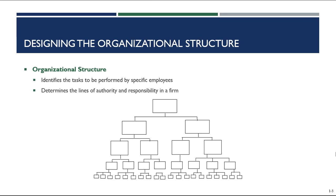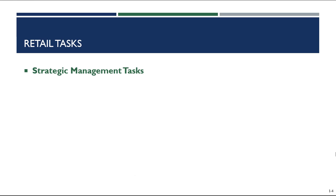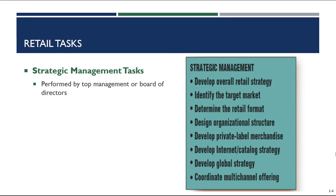The first group of tasks is called strategic management tasks, which are performed by senior management — the CEO, board of directors, or, for an independent retailer, the owner. This list of tasks is available in your textbook in Chapter 9. The strategic management team is responsible for developing the overall retail strategy, including all six P's for the retail establishment and making sure decisions are made strategically to generate profit.